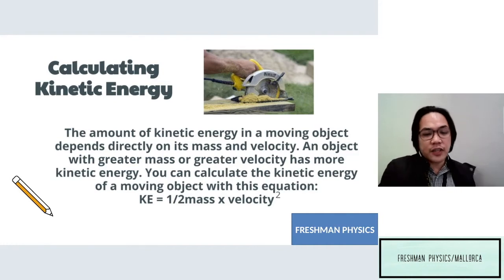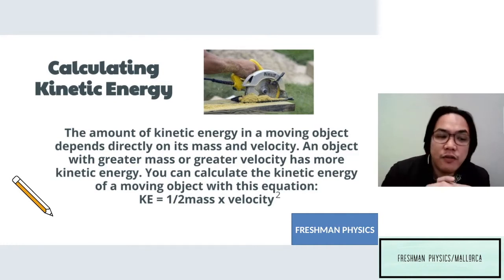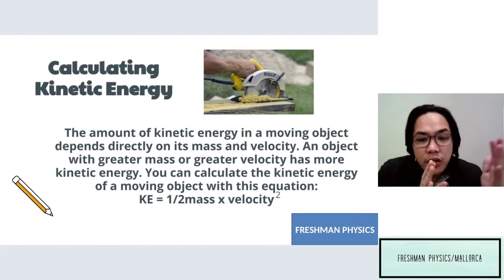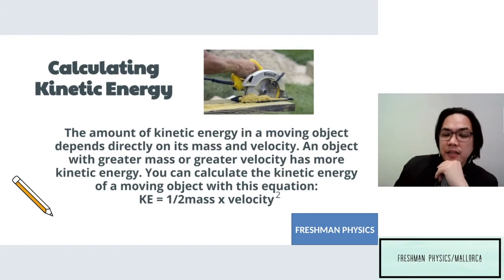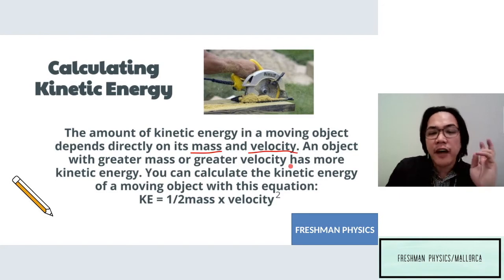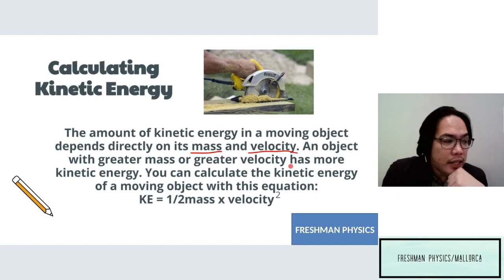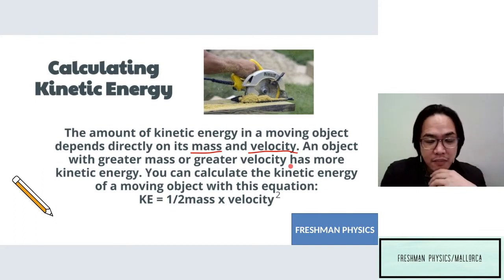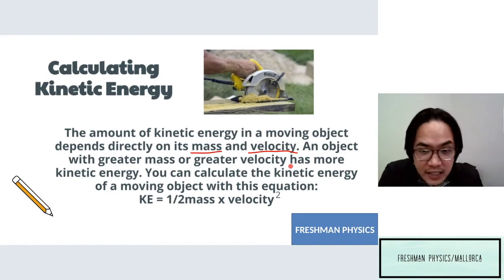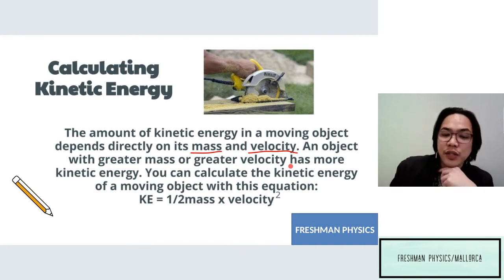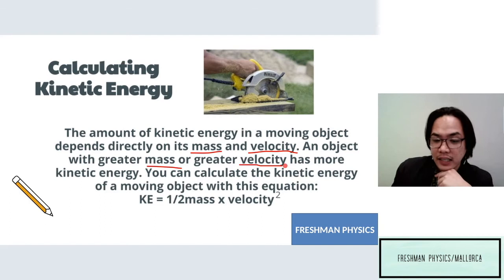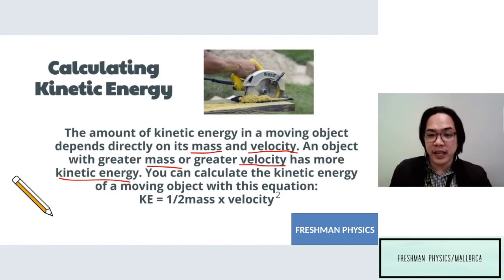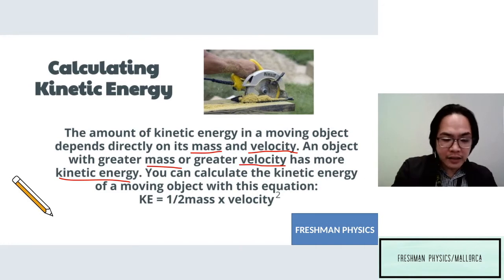So how do we calculate kinetic energy? The amount of kinetic energy on a moving object depends directly on its mass and velocity — those are the two quantities involved in kinetic energy. We can solve for kinetic energy if mass is present and if velocity is present. An object with a greater mass or greater velocity has more kinetic energy.